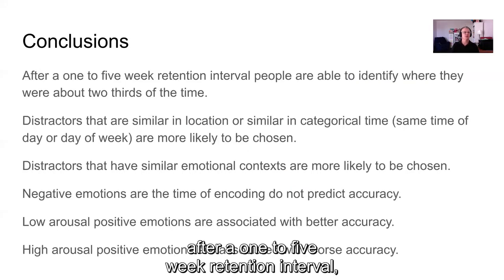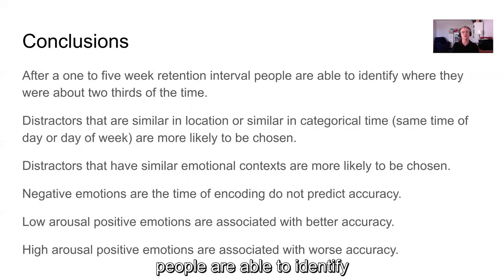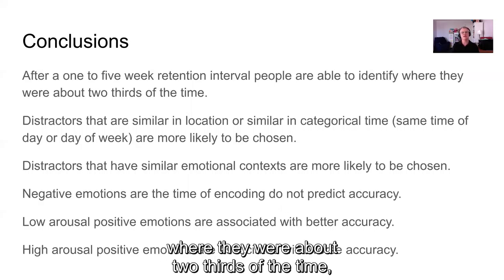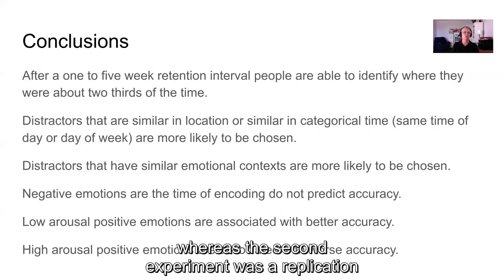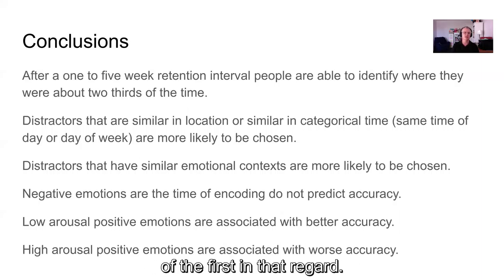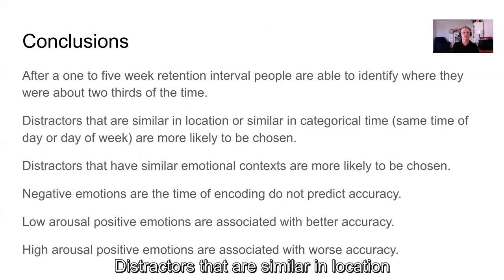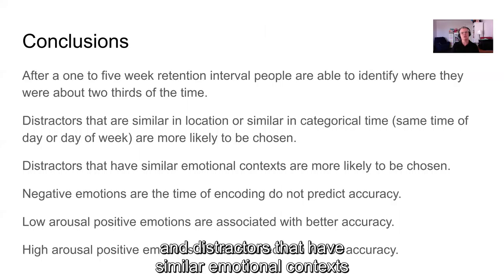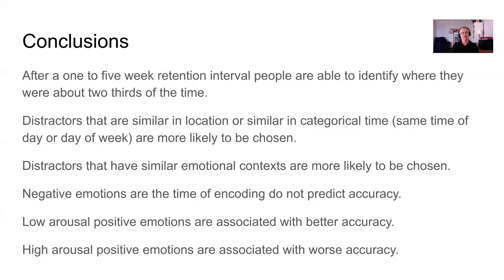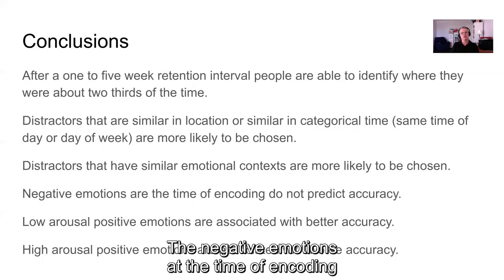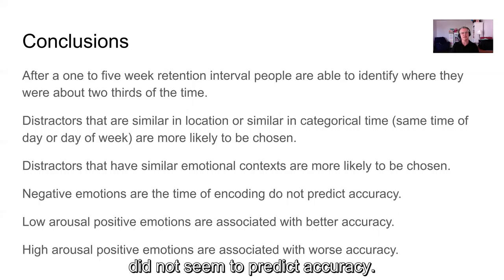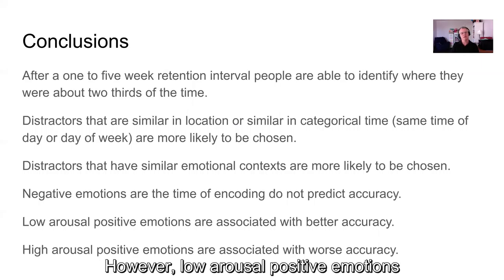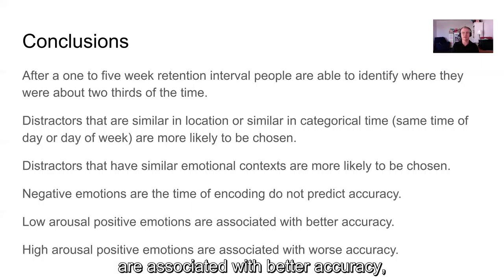In conclusion, after a one-to-five week retention interval, people are able to identify where they were about two-thirds of the time, replicated across both experiments. Distractors that are similar in location or categorical time are more likely to be chosen, and distractors with similar emotional context are more likely to be chosen. Negative emotions at the time of encoding did not predict accuracy, but low-arousal positive emotions are associated with better accuracy while high-arousal positive emotions are associated with worse accuracy.